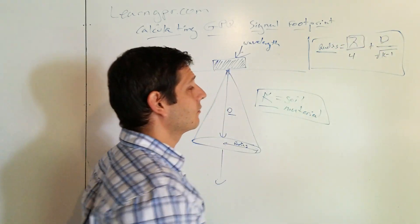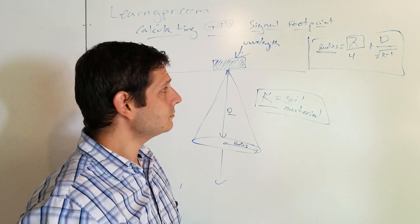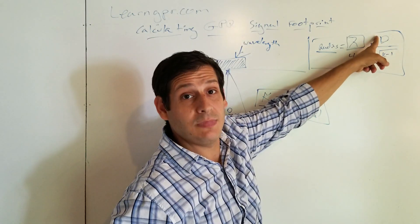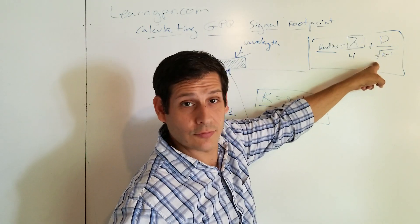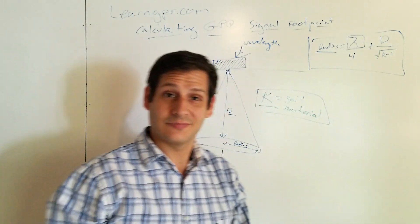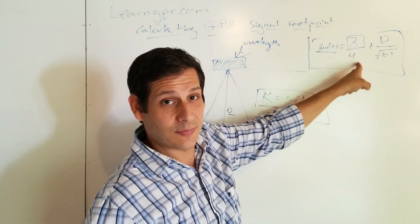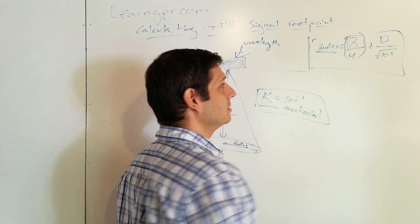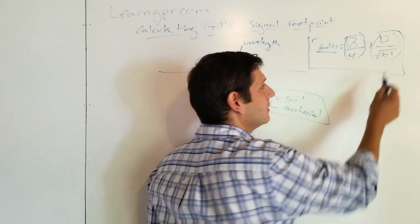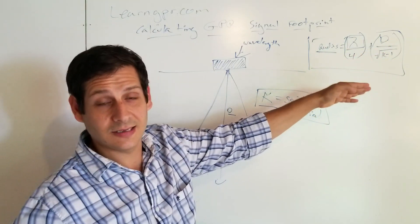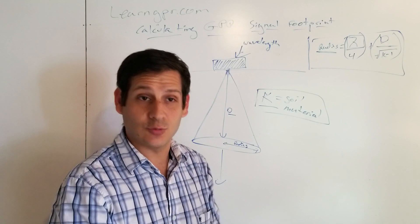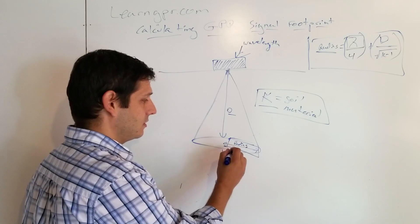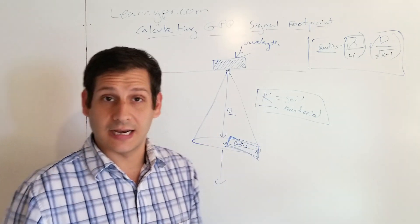So once you have wavelength, right, you take wavelength, you divide it by four. And it's plus the depth in meters divided by the square root of the permittivity minus one. So wavelength divided by four. Plus depth in meters divided by permittivity minus one square root of permittivity minus one. And you put all that together and it gives you an estimate of this number right here. Which is the radius of the footprint at any given depth.